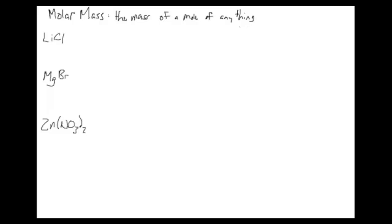Molar mass really only applies to atoms and possibly compounds. We have three examples: lithium fluoride on top with no subscript numbers, magnesium bromide in the middle with a two next to the bromine — meaning for every one magnesium we have two bromines — and zinc nitrate at the bottom with several more numbers, which we'll get to shortly.